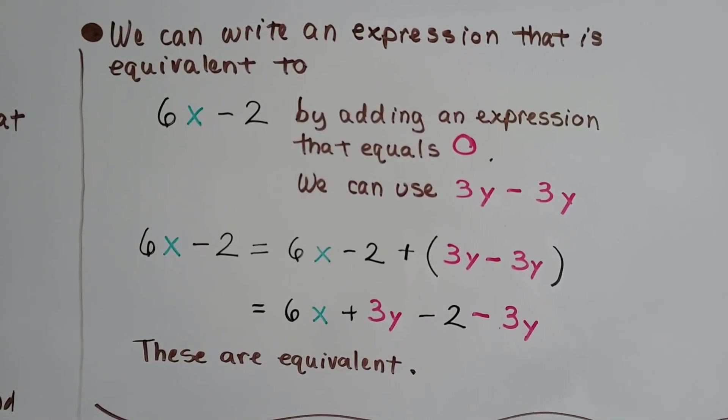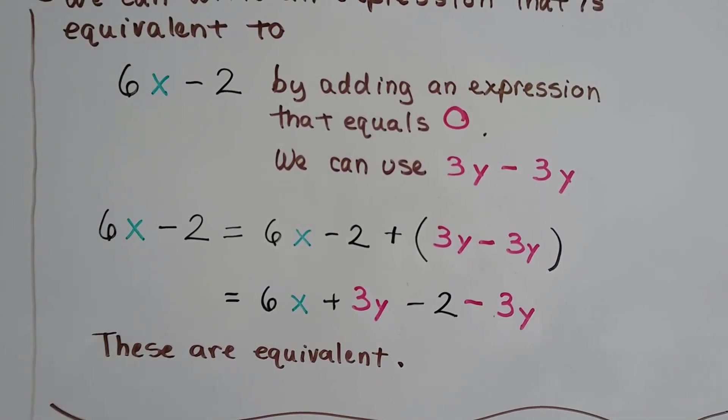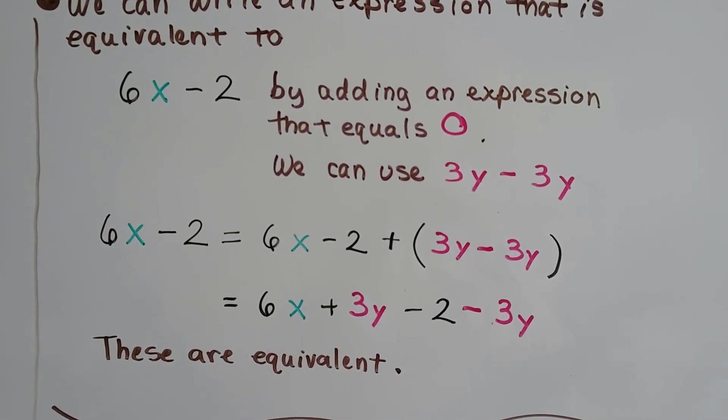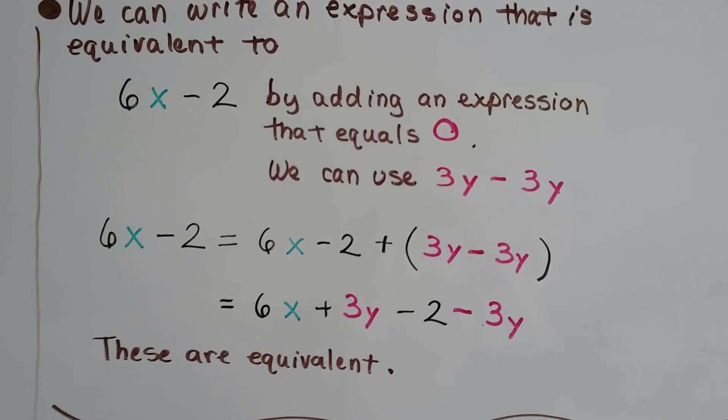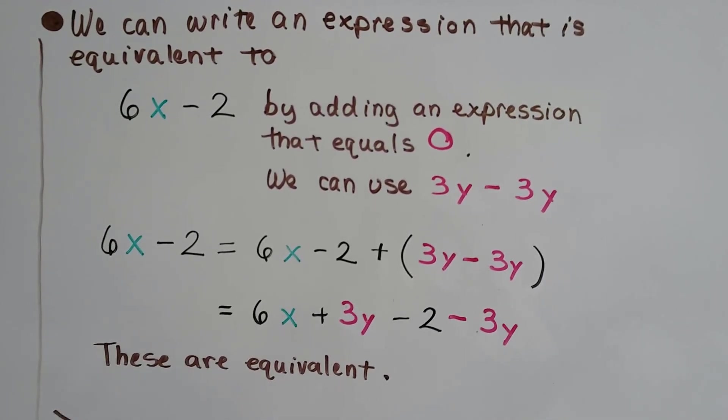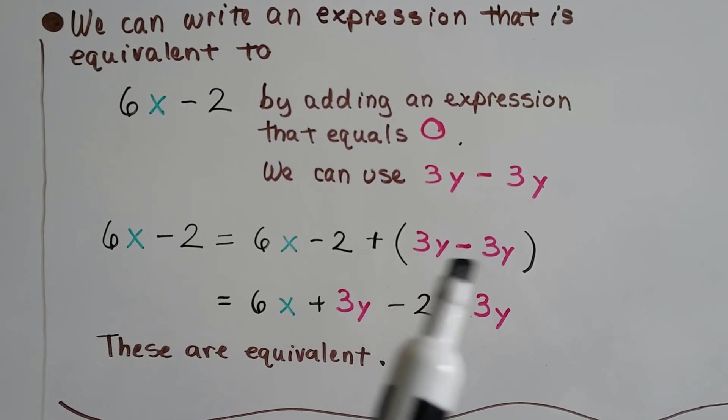We can write an expression equivalent to 6x minus 2 by adding an expression that equals 0. We could use 3y minus 3y, or 5y minus 5y, or 10z minus 10z, as long as it equals 0. So 6x minus 2 is going to be the same thing as 6x minus 2 plus this 0 expression.